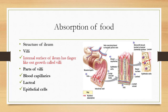First, we will look at villi. The internal surface of the ileum has finger-like outgrowths called villi. As you can see in this diagram, the villi give a velvety appearance to the inner wall of the ileum. Each villus is composed of 3 parts: blood capillaries, lacteal, and epithelial cells. These all parts can be seen in this diagram.